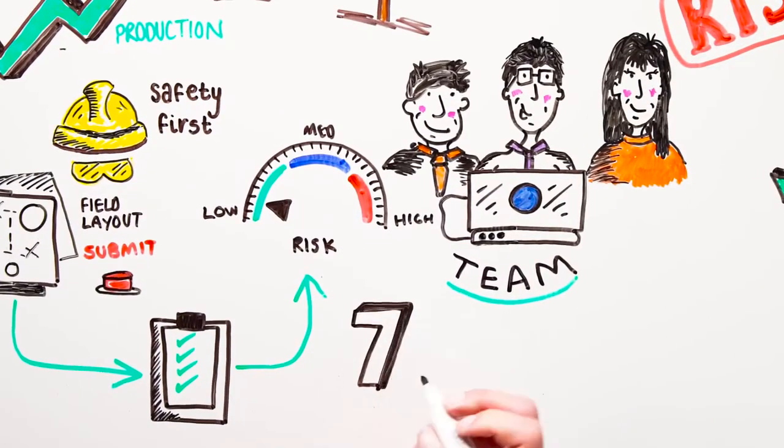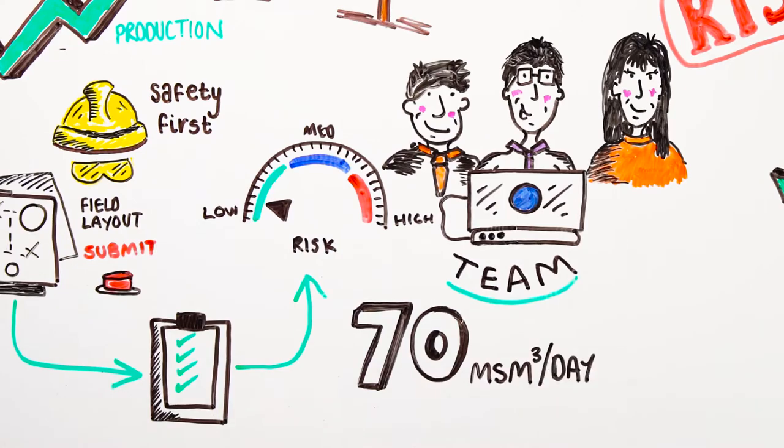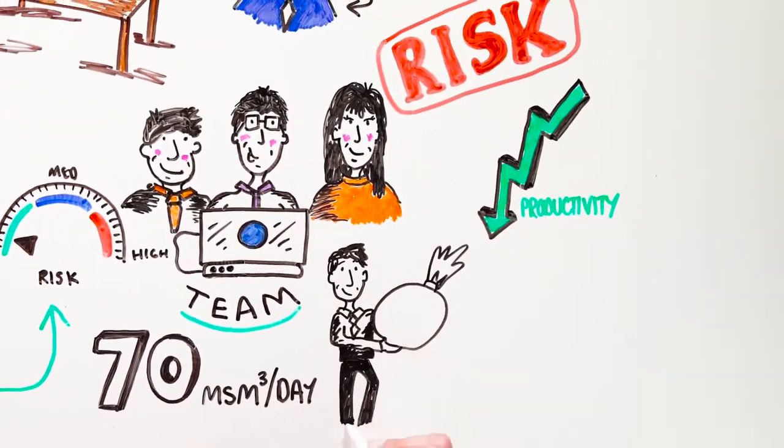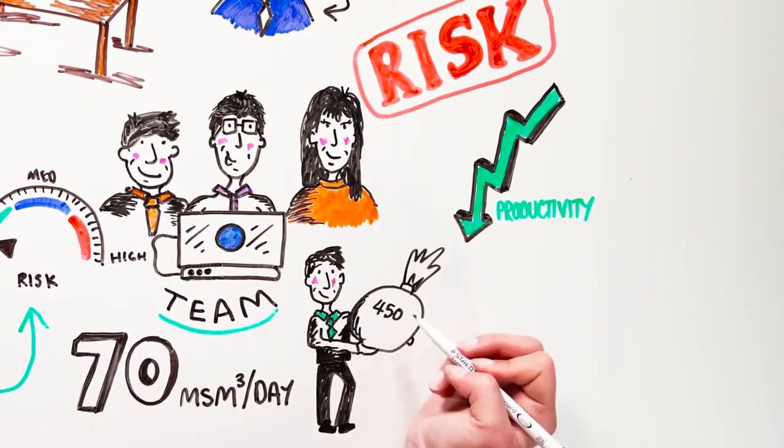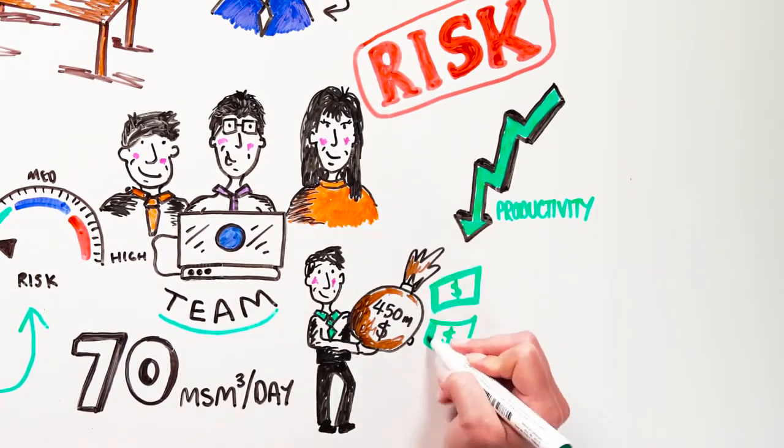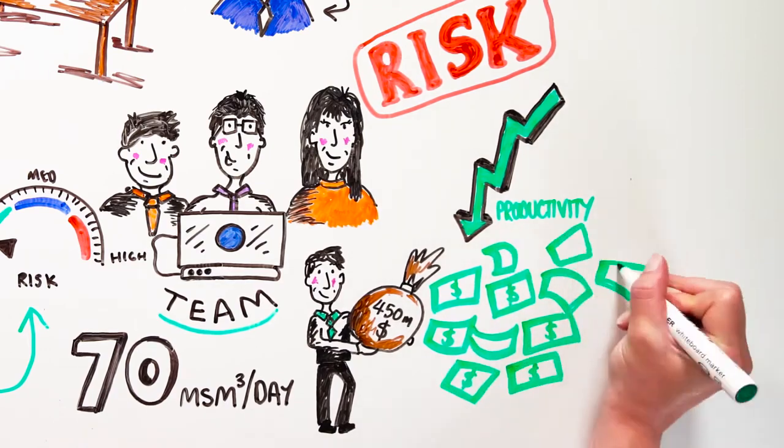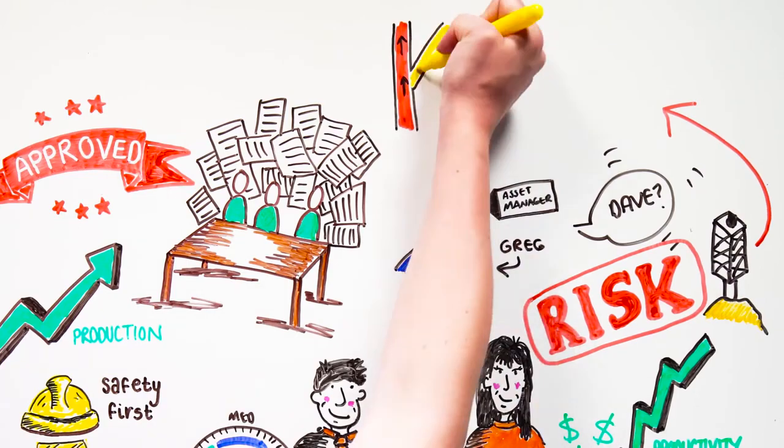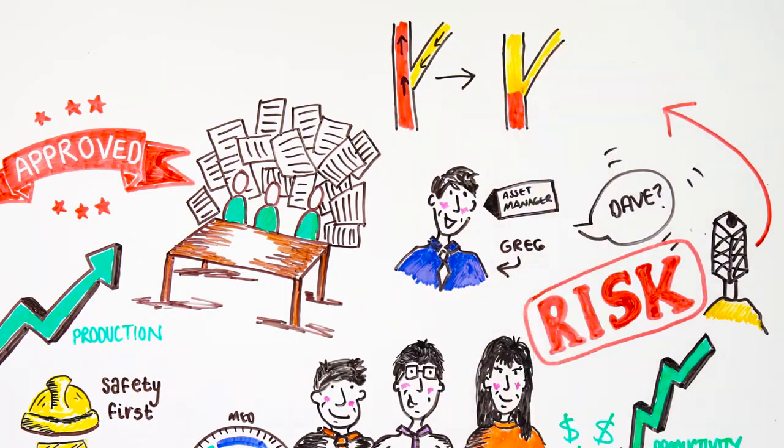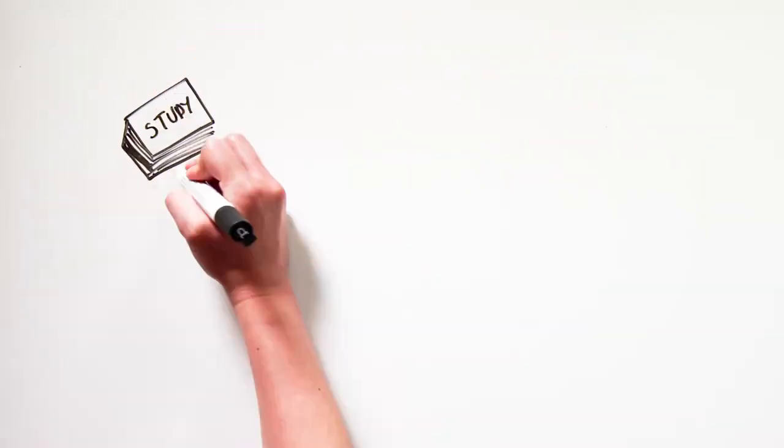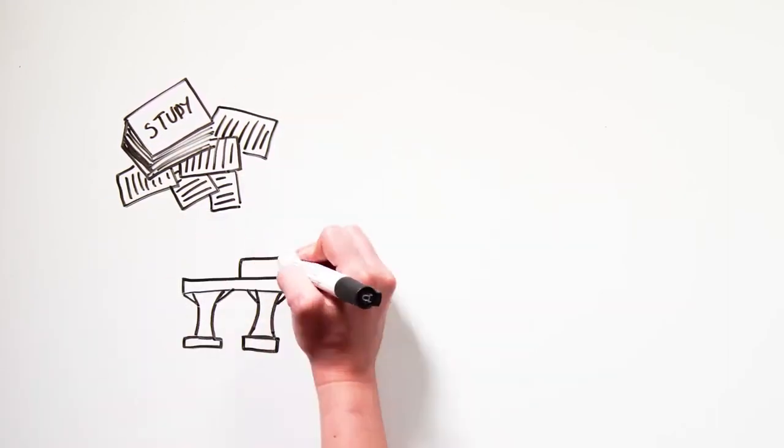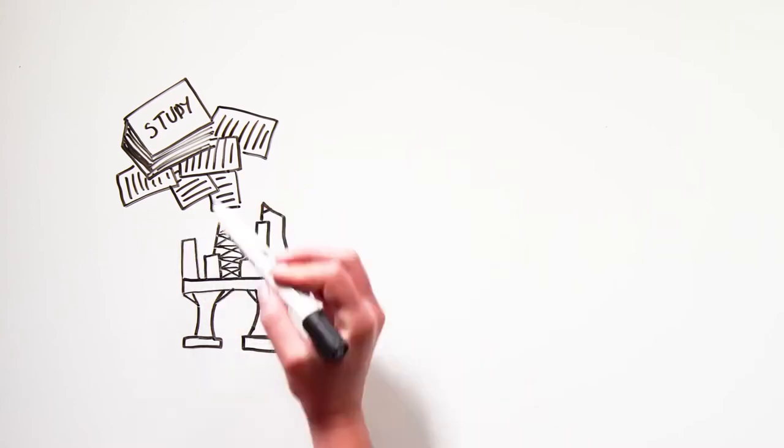To get the go-ahead, the field must be designed to meet the production target of 70 million standard cubic meter per day. The project must stay within a $450 million budget, and the operator's internal policies mandate that the team must demonstrate that the well can be killed via a single relief well in the event of an uncontrolled hydrocarbon release. With this in mind, Asset Manager Greg and Development Coordinator Dave kick off a pre-feed study to build a case for project sanction.